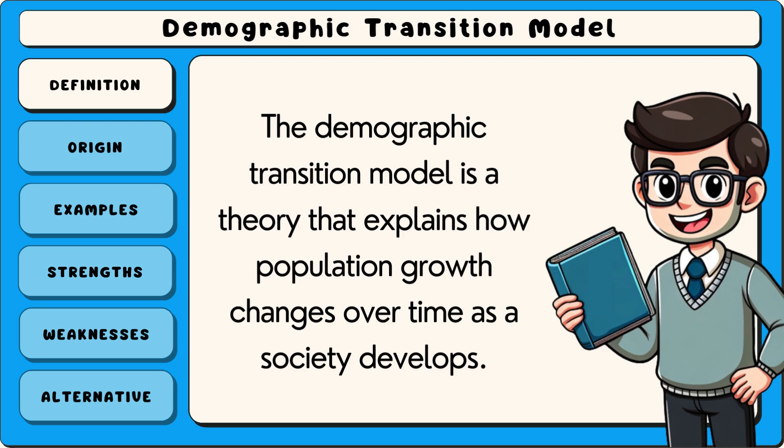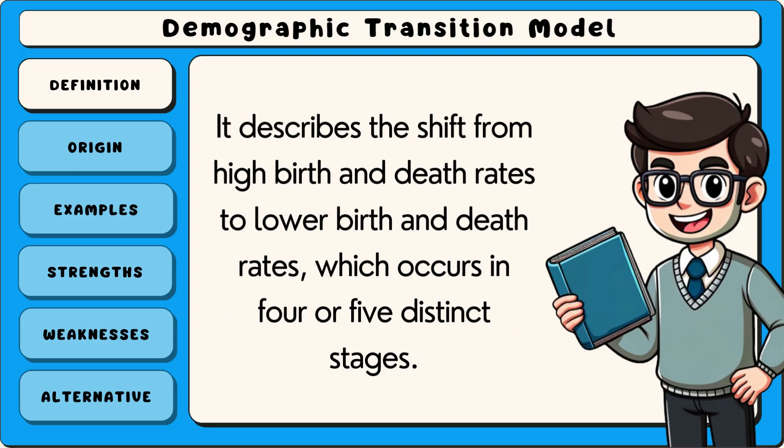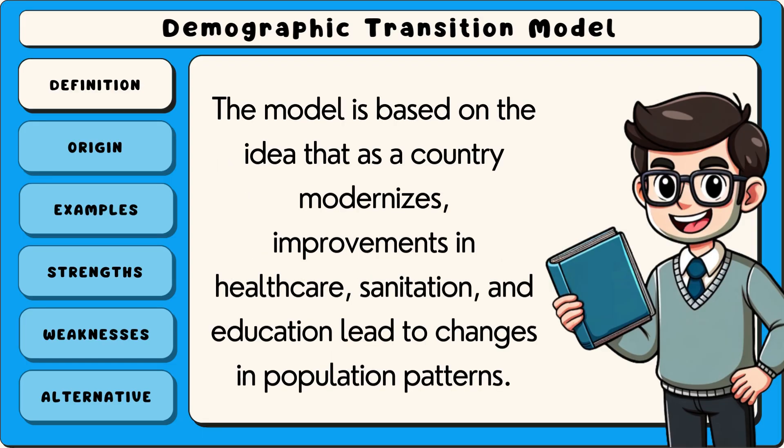The demographic transition model is a theory that explains how population growth changes over time as a society develops. It describes the shift from high birth and death rates to lower birth and death rates, which occurs in four or five distinct stages. The model is based on the idea that as a country modernises, improvements in healthcare, sanitation and education lead to changes in population patterns.